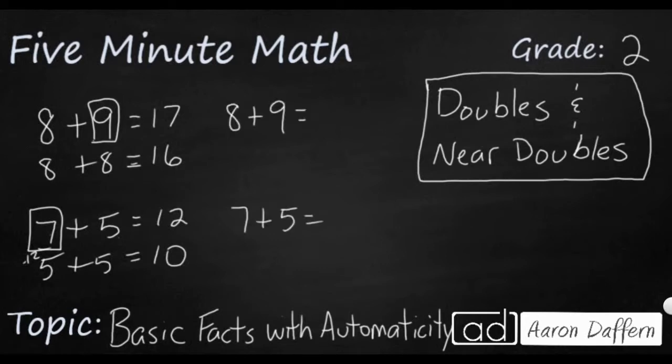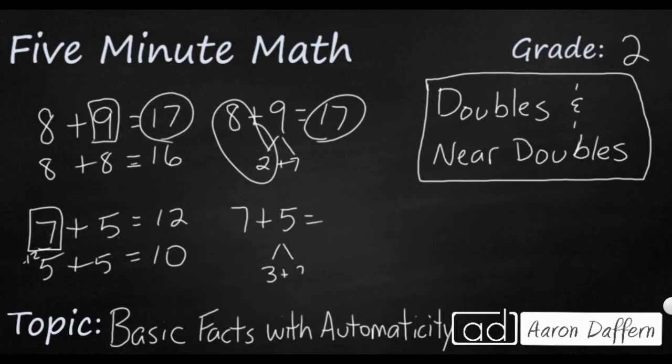And to double check, let's just use our make it 10. So 8 plus 2 makes 10. That's going to be 7 more. So that's 10. That's 17. So that checks out. And then 7 plus 3 makes 10. And that 2 is going to make an extra 5. So that's going to be 12.